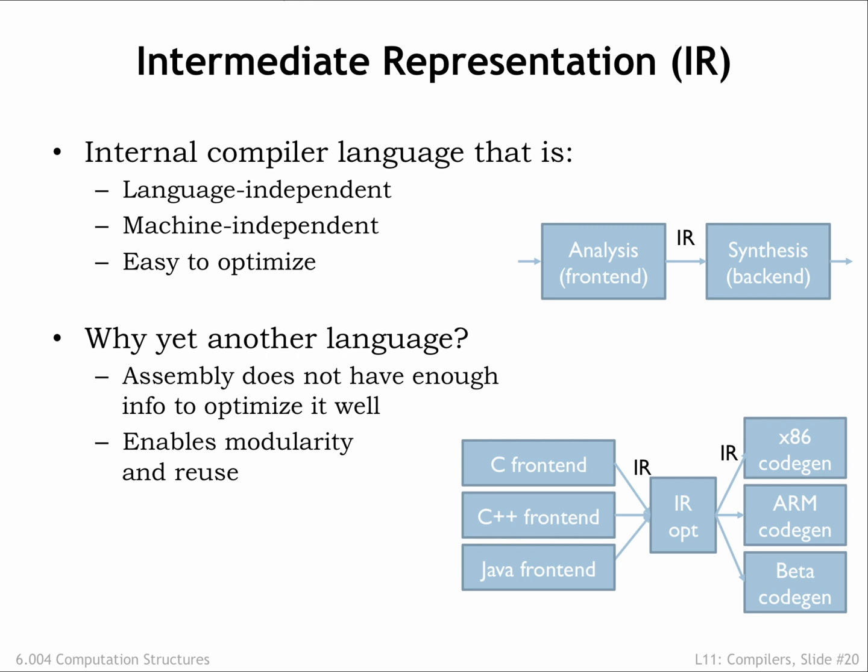As we'll see, the backend processing can be split into two sub-phases. The first performs machine-independent optimizations on the intermediate representation. The optimized intermediate representation is then translated by the code generation phase into sequences of instructions for the target ISA.